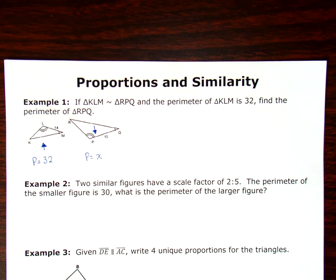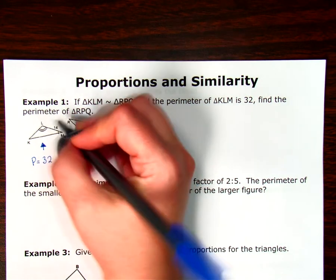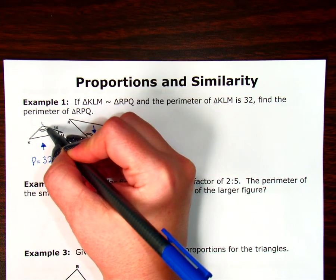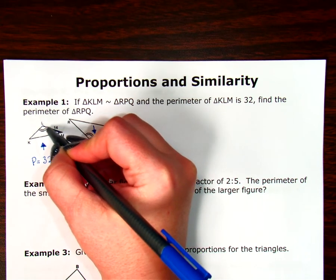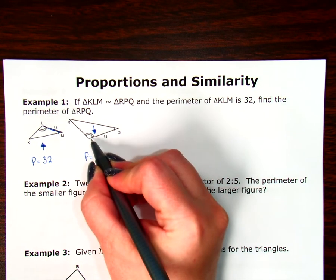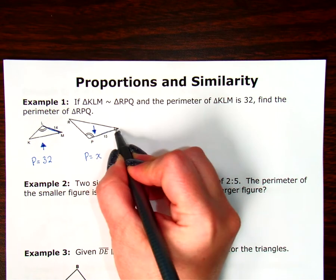The perimeter is reduced to the scale factor. The corresponding sides reduce to the scale factor. So when I look at my first triangle, I see that LM is 14. And when I look at my second triangle, I see that PQ is 15.